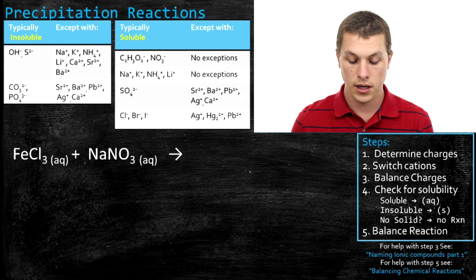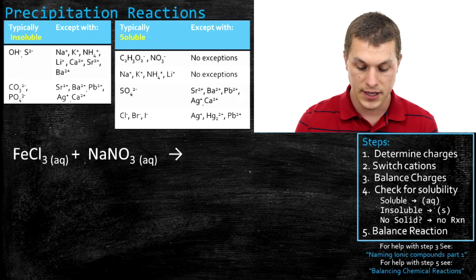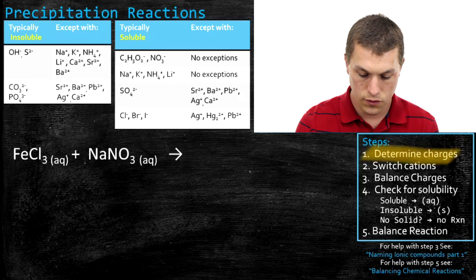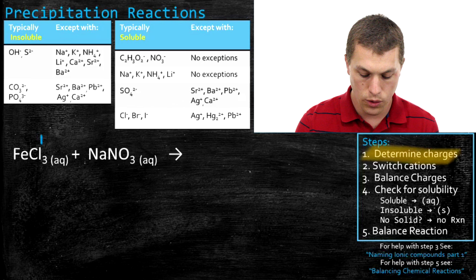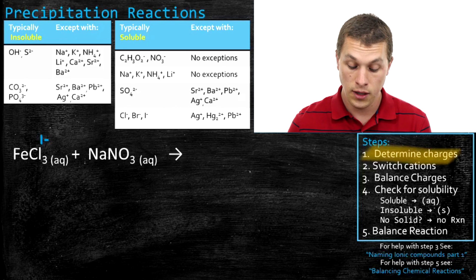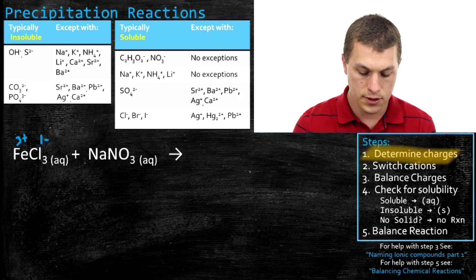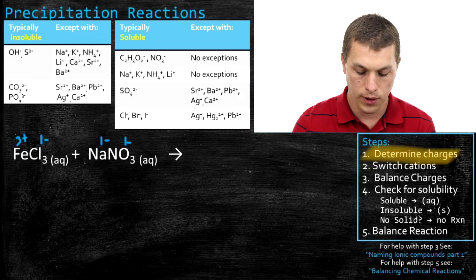One more example: we're going to combine iron chloride with sodium nitrate and follow the same steps. Step one, determine the charges. Chlorine is one minus and there are three of them, giving a total of negative three from chlorine, so iron must be three plus. Nitrate is again negative one, and sodium is plus one.